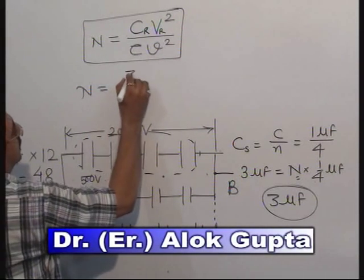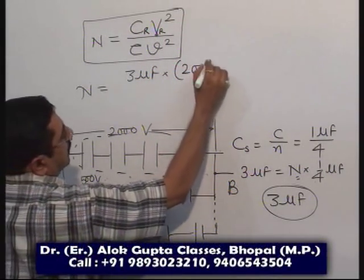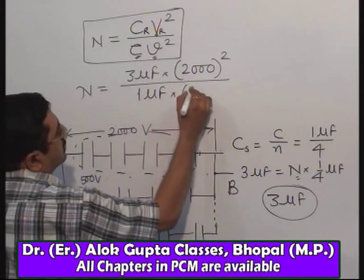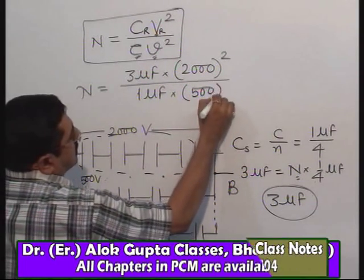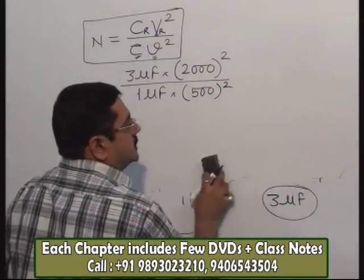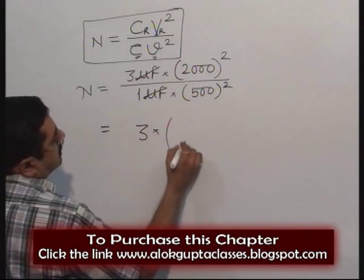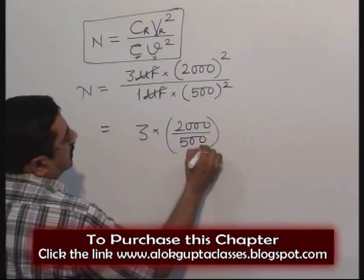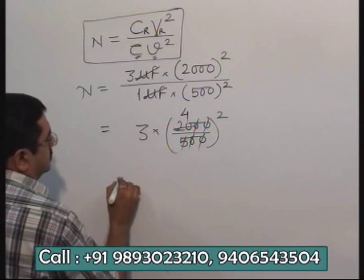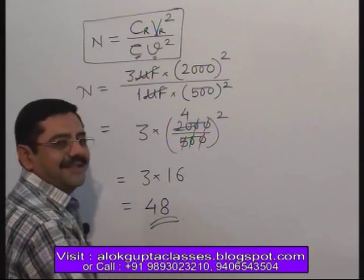Directly apply the formula. C required is 3 microfarad, voltage required is 2000 volt — squared. Divided by: single capacitor capacitance is 1 microfarad, and the voltage for a single capacitor is 500 volt — squared. Simplifying: 2000 divided by 500 equals 4, so we get 3 times 4², which is 3 times 16, equal to 48. That is the answer — 48 capacitors. Simply apply the formula and this very powerful shortcut can be applied to any question of this kind.